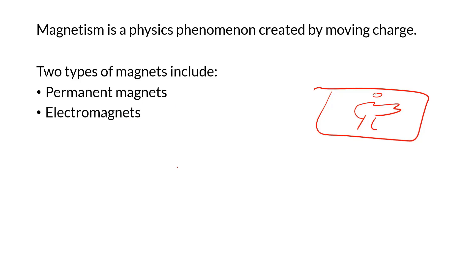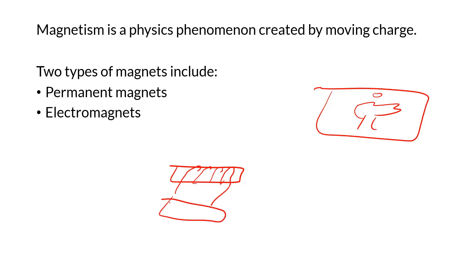And then there are electromagnets, which are the types used in the doors of the school and used to pick up cars in a junkyard. They're a magnet that includes some sort of power source, and current running through that power source creates a magnetic field, which makes an object a magnet - those are electromagnets.